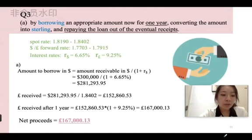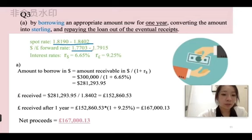From the title, we can note the sterling US dollar spot rate is 1.8190 to 1.8402. The 12-month forward rate of dollars against the sterling is 1.7703 to 1.7915.